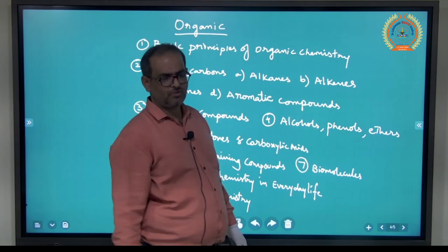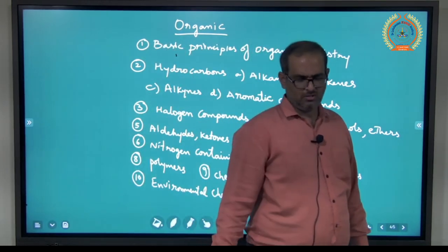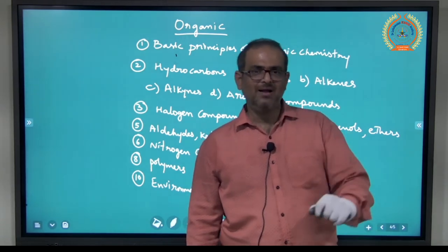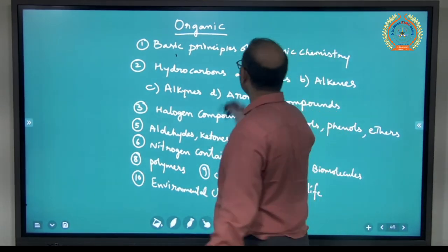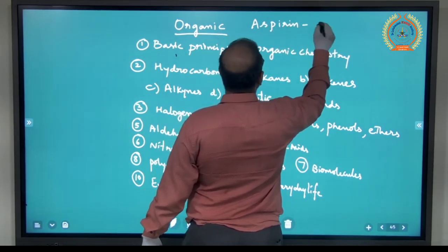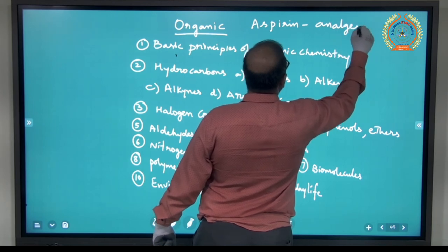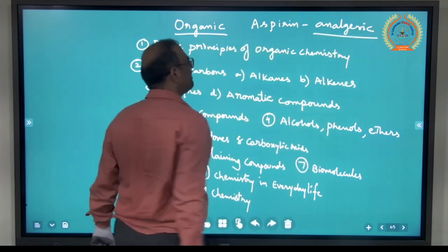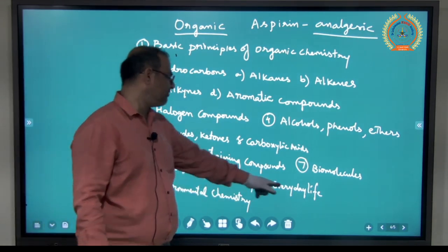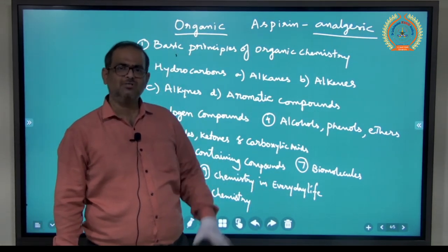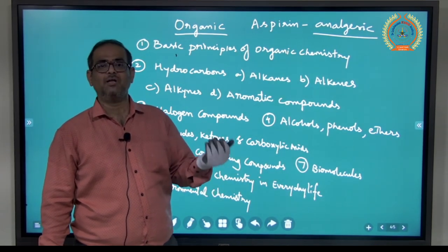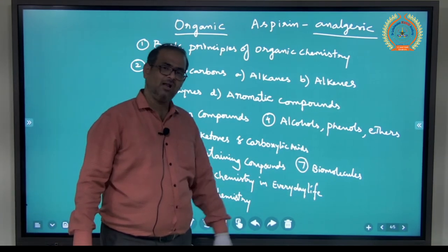Chemistry in everyday life. Drug chemistry. If you get stomach ache or any particular pain, we take a medicine. That medicine you call it as aspirin. What is aspirin? You call it as analgesic agent. What do you mean by analgesic? Pain reliever. So in chemistry in everyday life, we will talk about some drugs, their structure and mode of activity.